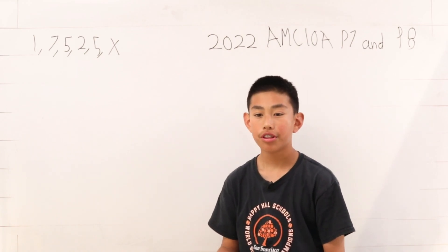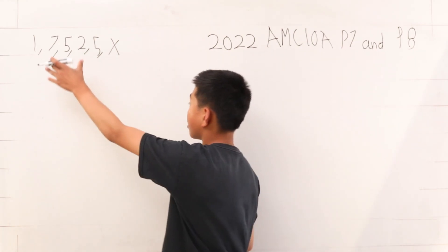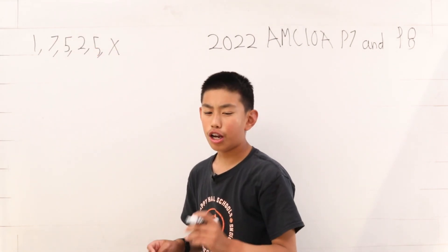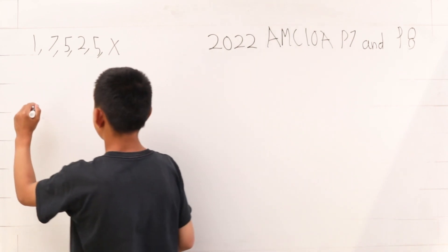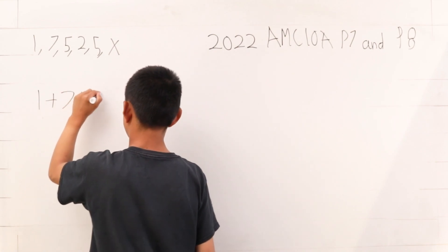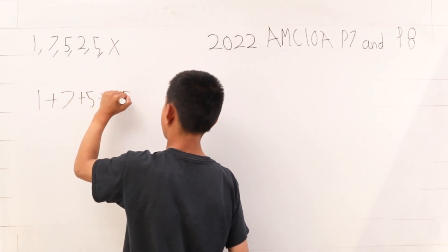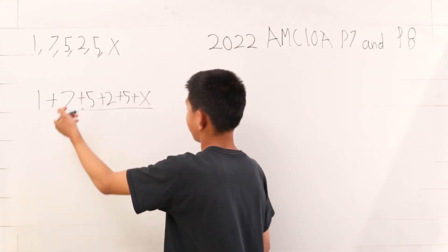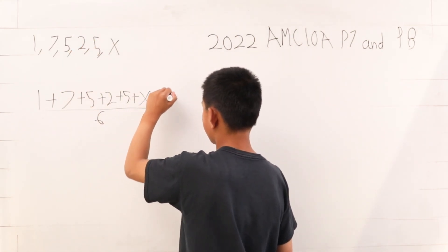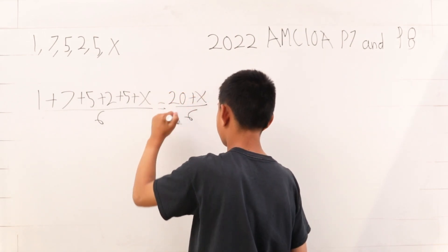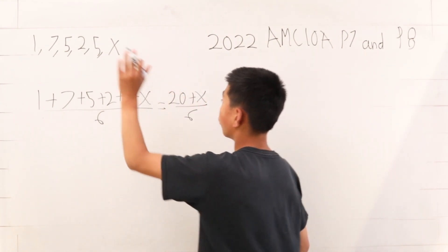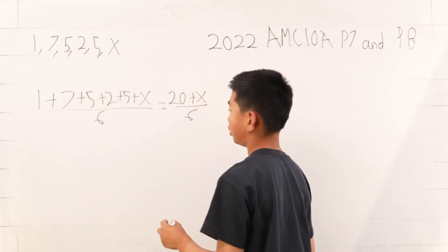Remember that the arithmetic mean is adding all the numbers up and then dividing by the number of numbers in the sequence. In this case, it's 1 plus 7 plus 5 plus 2 plus 5 plus x, divided by 6. This is 20 plus x over 6. And we know that 20 plus x over 6 has to be one of these numbers.